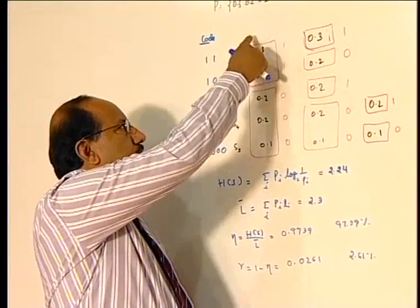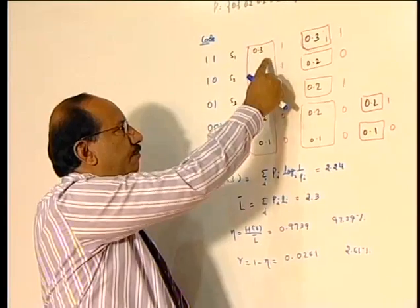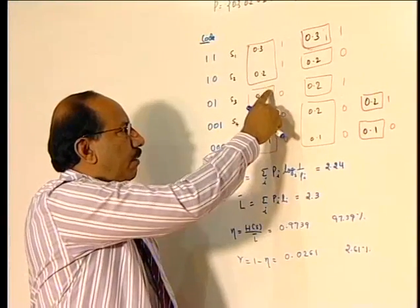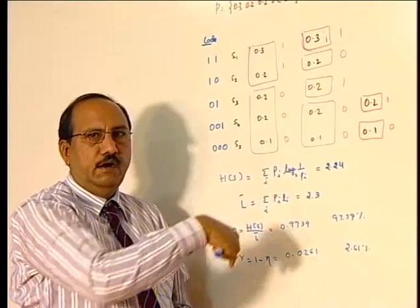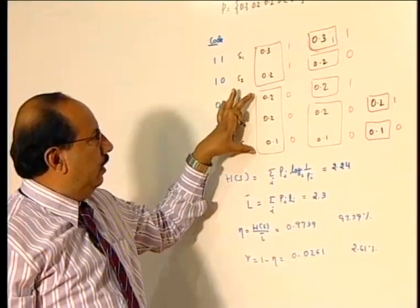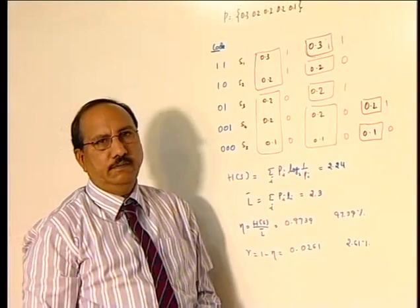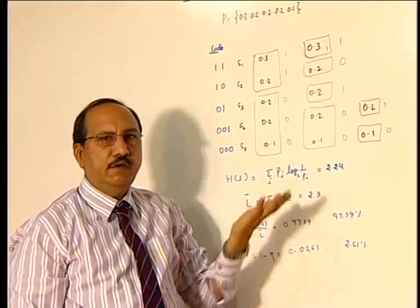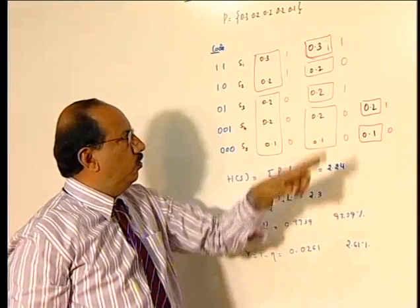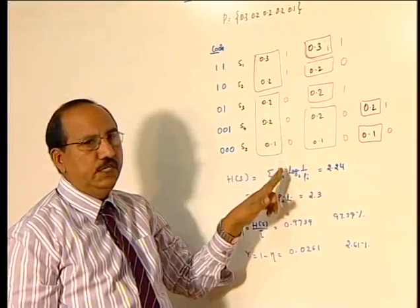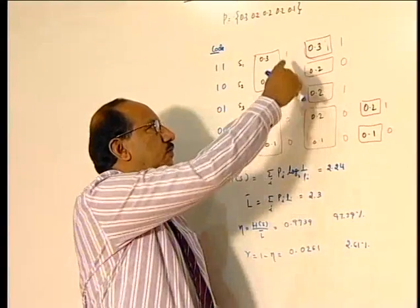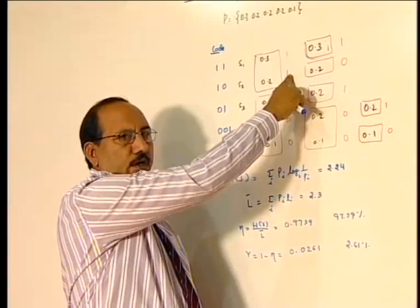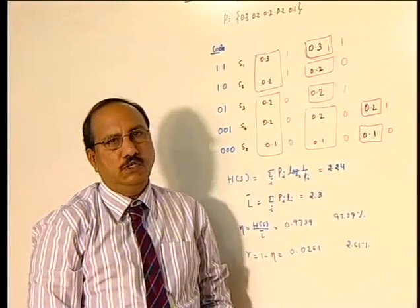Here I am getting, I will make into two blocks: the first one with a probability of 0.3, 0.2 gives 0.5. In the second half, I am going to get 0.2, 0.2, 0.1. This also when you add gives a total probability of 0.5. Then assign either 1 or 0 to the upper one, then complement of that to the lower one. Here there is no rule that it should be 1 and this is 0. Based on your assumption you can change. So here what I have done, I assumed the upper one I assigned 1, 1 and for the bottom half I am going to assign 0, 0, 0.